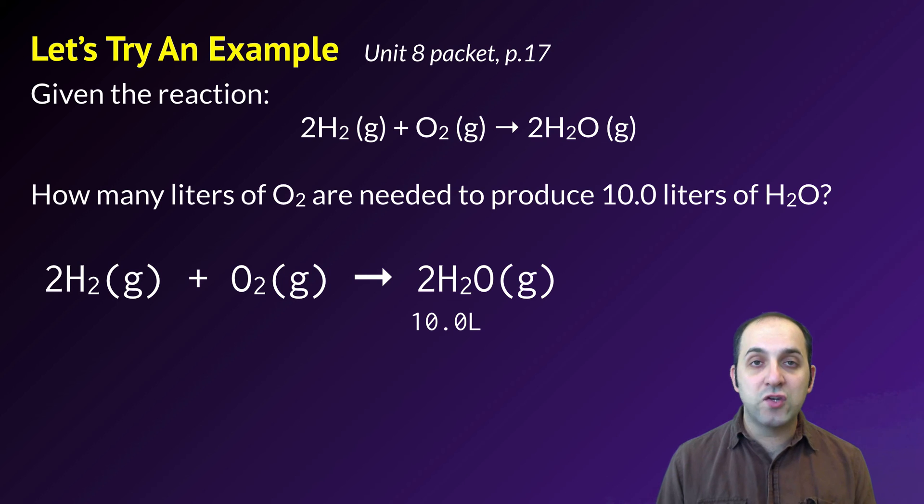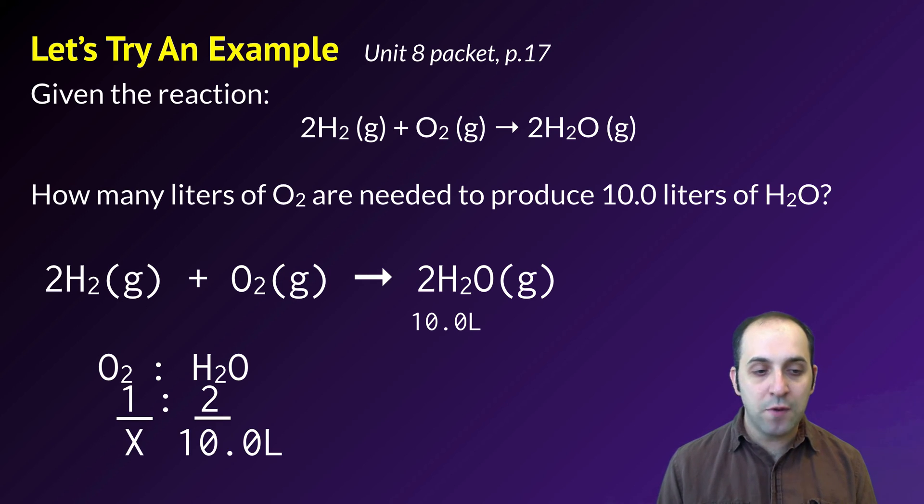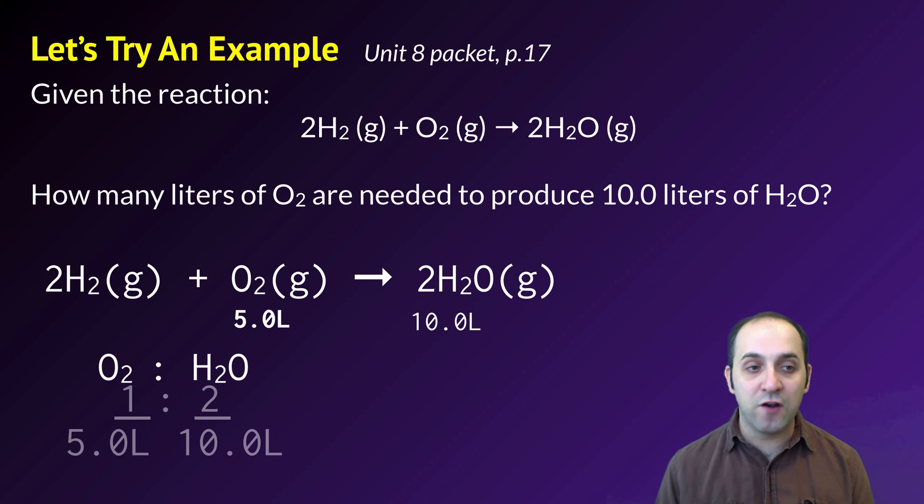So looking at this equation, I've got 10 liters of water and I want to figure out how many liters of oxygen are produced. I can just look at the mole ratio directly. Oxygen and water are in a 1-2 relationship. I'm producing 10 liters of water, so I've solved for x liters of oxygen. It's 5 liters of oxygen. That is my final answer. I would expect that I would need 5 liters of oxygen to produce 10 liters of water. Does that make sense? If it doesn't, take a moment and write down any questions that you have before we wrap up.